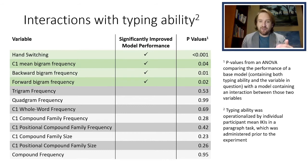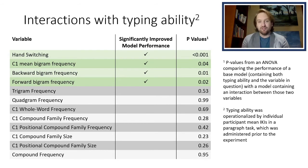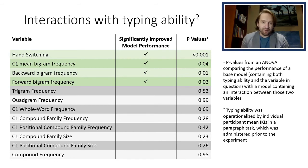In this analysis, we took each variable and constructed two models. One model contained the variable in question as well as typing ability, and the other contained an interaction between those two. We then assessed model performance by comparing the two models and determined whether the addition of the interaction term improved model performance. We saw that only hand switching, C1 mean bigram frequency, backward bigram frequency, and forward bigram frequency showed model improvement when an interaction term was added. Our conclusion was that the more central linguistic processes did not interact with typing ability and are therefore indeed linguistic in nature.